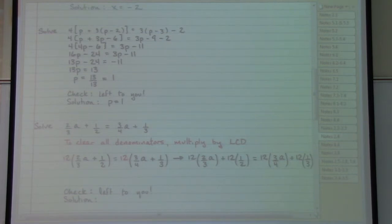Let's include an extra little step here about what this would look like. 12 times 2 thirds: 12 times 2 is 24, 24 over 3 is 8a. 12 times 1 half: 12 times 1 is 12, 12 over 2 is 6. 12 times 3 fourths: 12 times 3 is 36, 36 over 4 is 9a. 12 times 1 third: 12 times 1 is 12, 12 over 3 is 4.